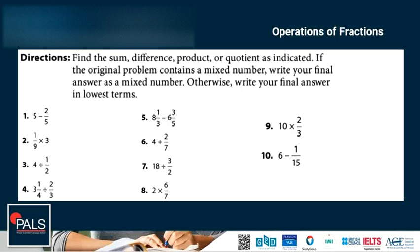5 minus 2 over 5. So 5 can have a denominator of 1. So we have 25 over 5 minus 2 over 5 equals 23 over 5, equals 4 and 3 over 5.